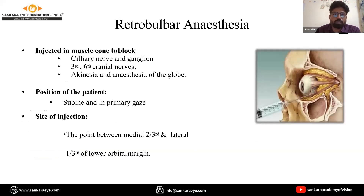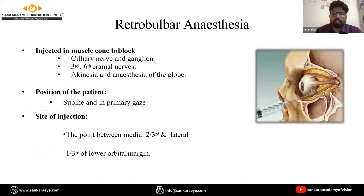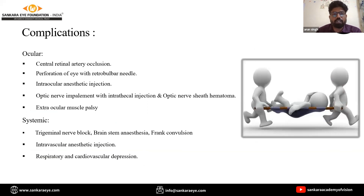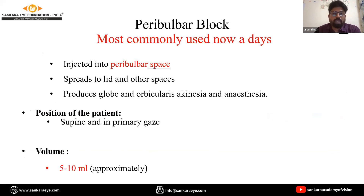Techniques include retrobulbar anesthesia, in which the anesthetic is given into the cone of the extraocular muscles, blocking the ciliary ganglion and the third and sixth cranial nerves, causing akinesia and anesthesia of the globe. However, due to a list of ocular and systemic complications, retrobulbar anesthesia is no longer commonly used.